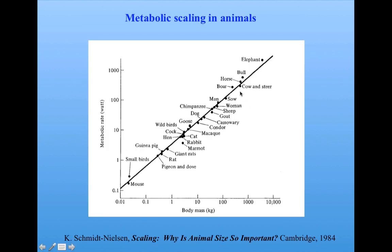One famous power law we're going to be talking about in this unit is the law of metabolic scaling in animals. If you plot the body mass of an animal on one axis versus the metabolic rate — the amount of energy in the metabolism, measured in watts — for animals of different mass, you can see these different animals fall on a straight line. This has some very surprising properties that we'll be talking about in more detail in a little while.